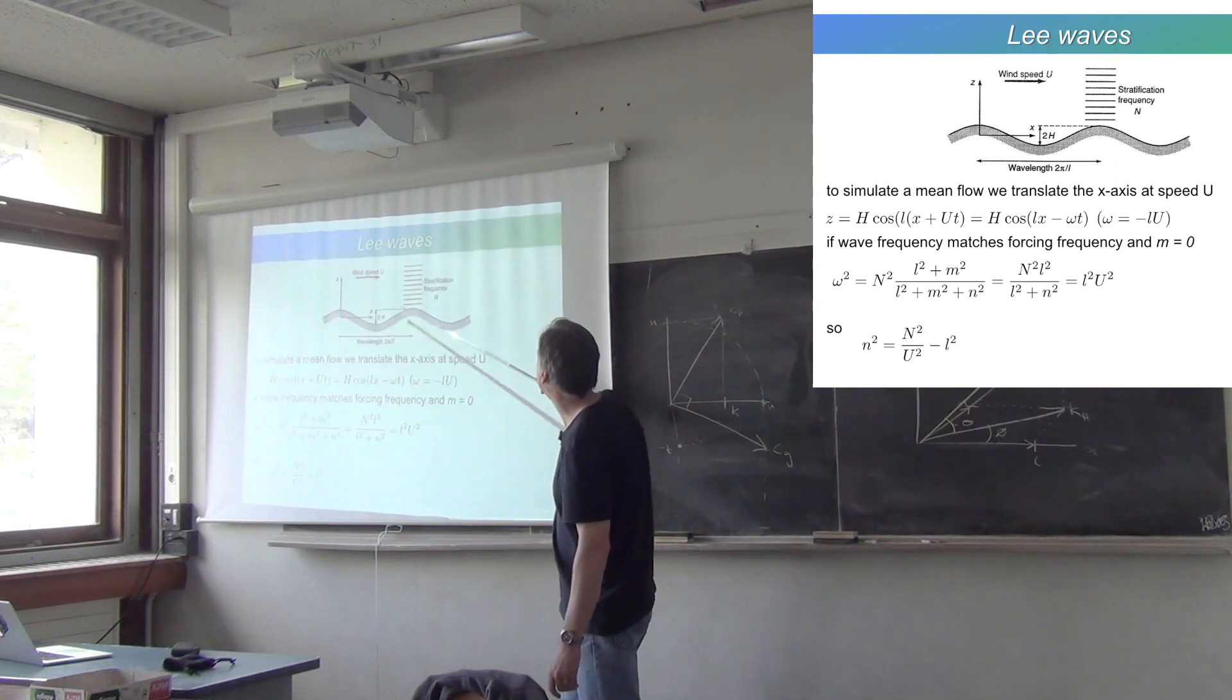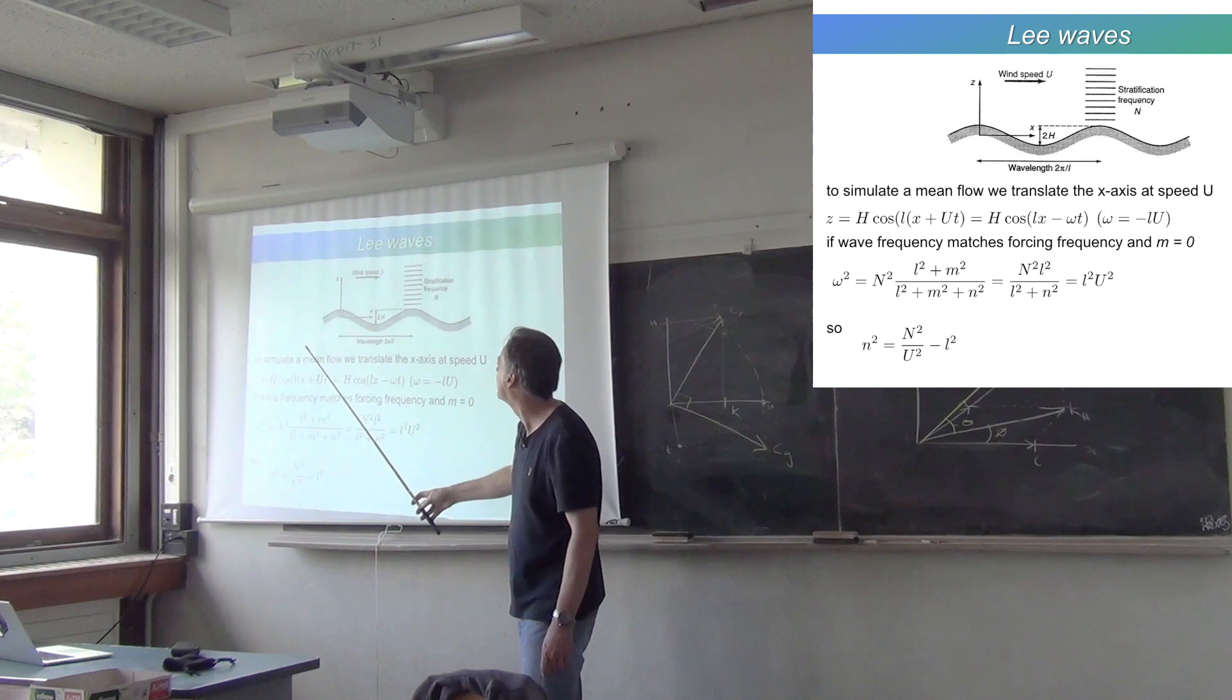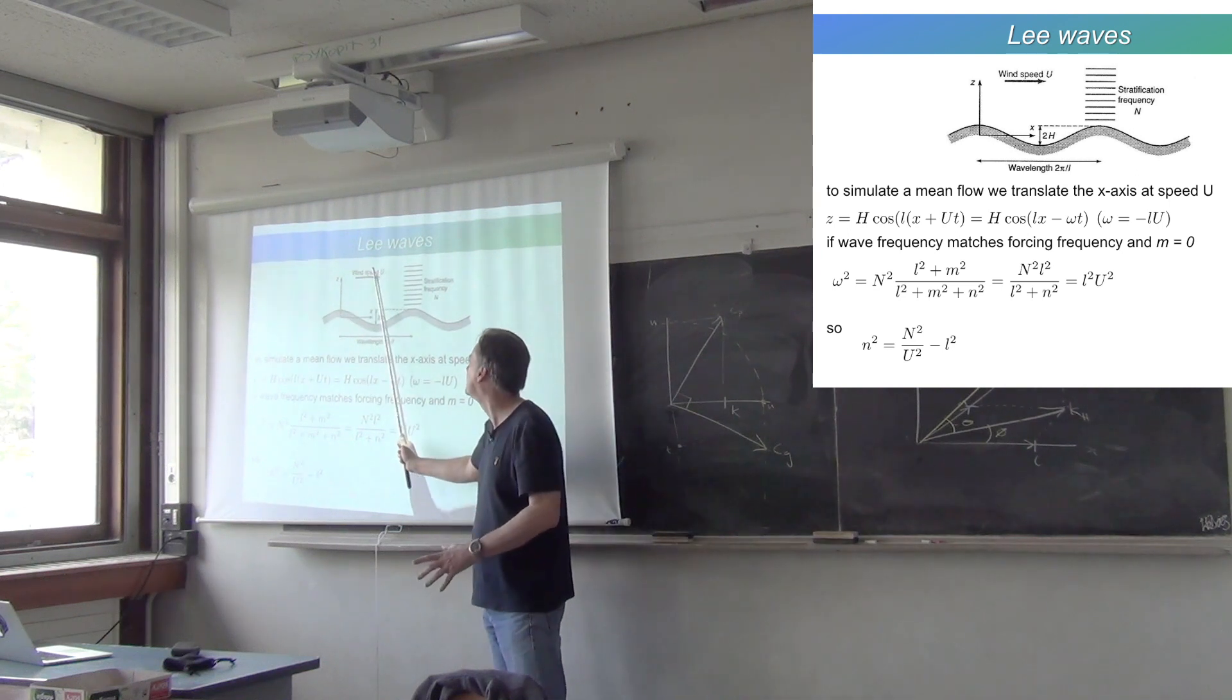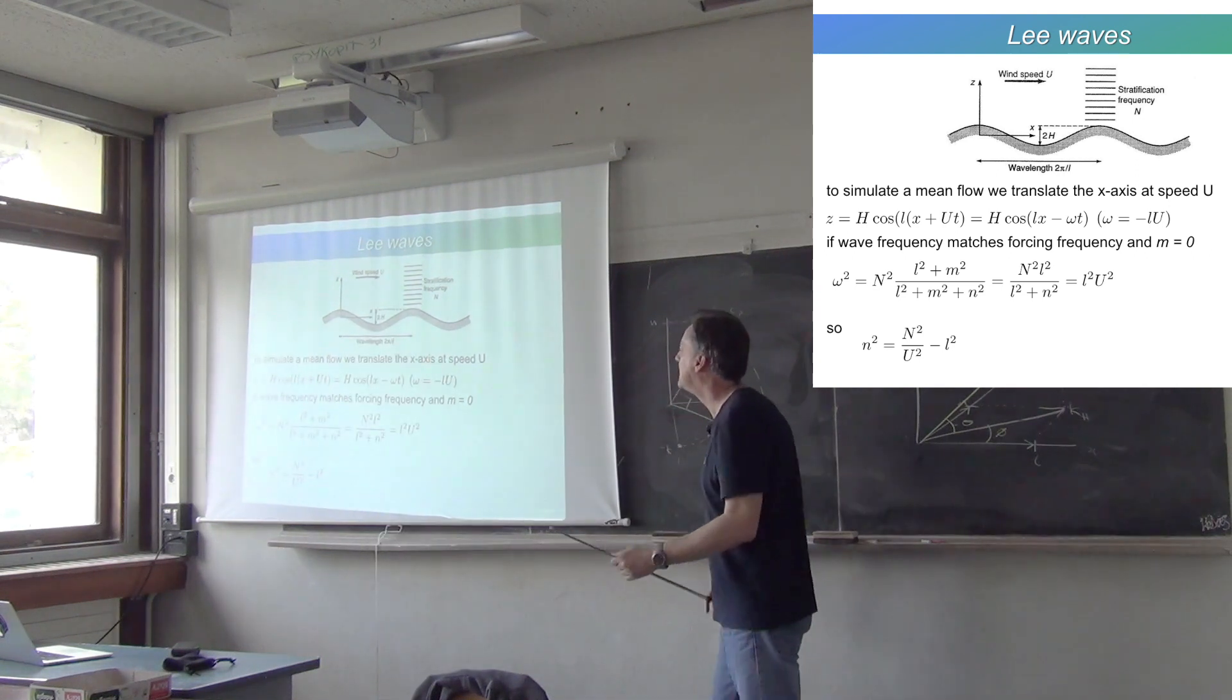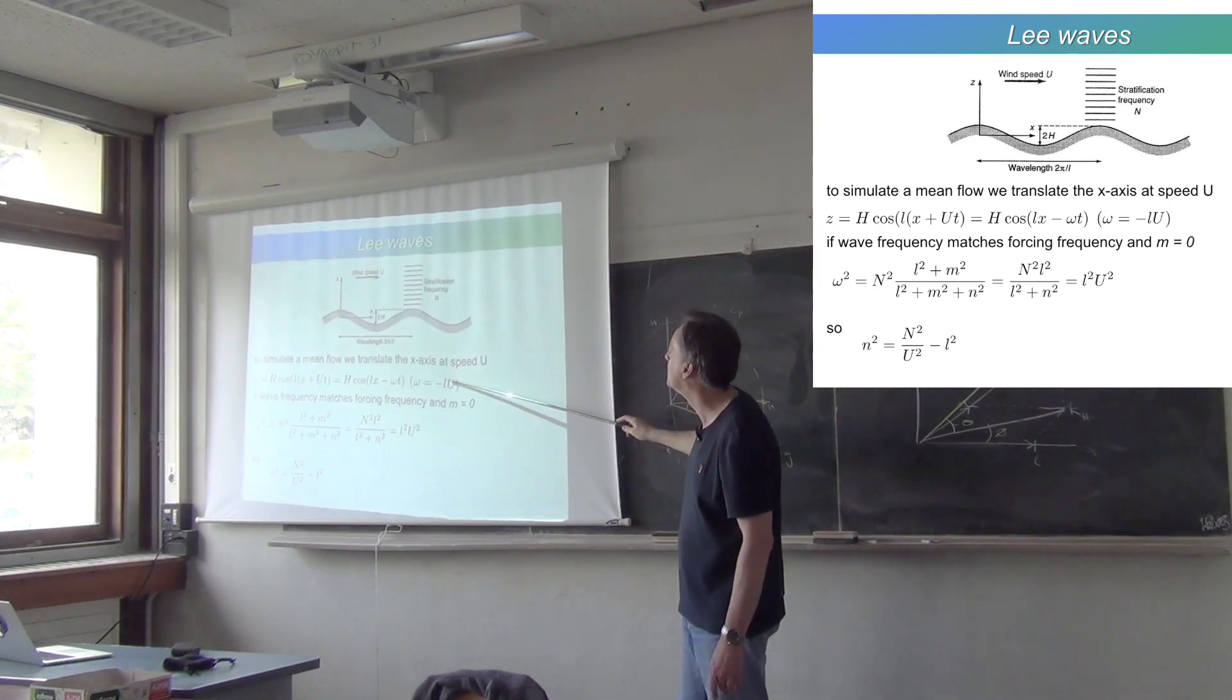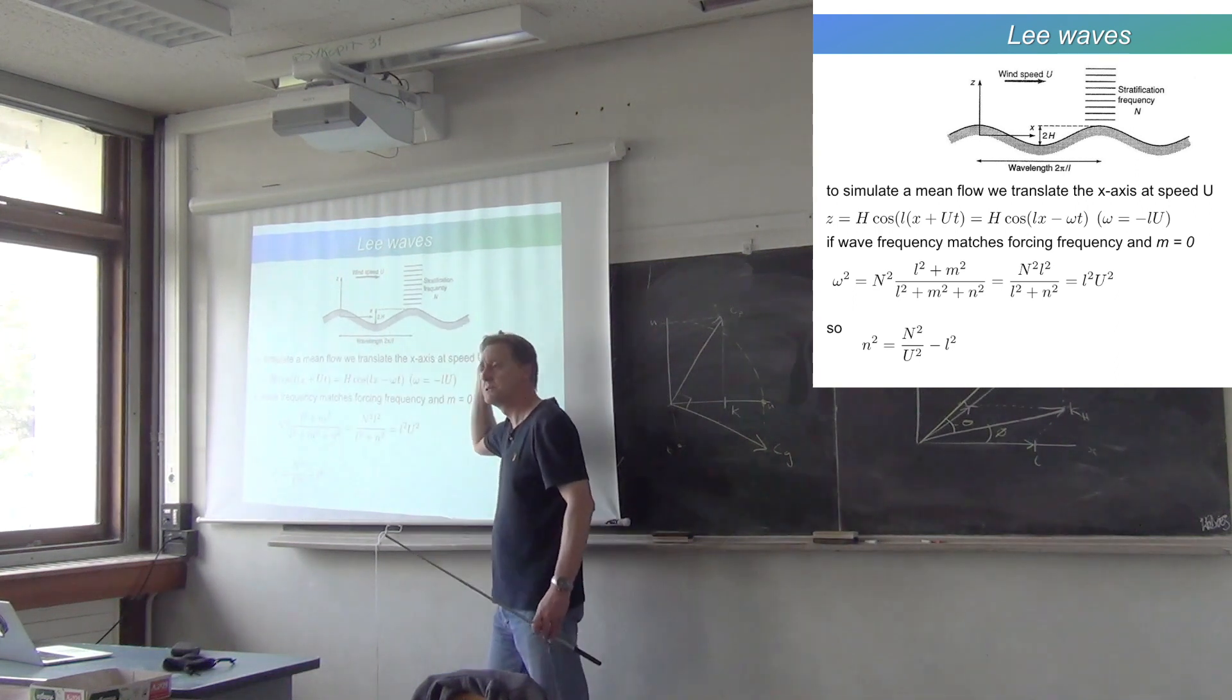As you flow across this topography, your frequency will be determined by your flow speed. The elevation Z that you feel will be L times X, because that's where it is in space, plus a thing you add to X which is U times T. So it's L times X plus UT because you're flowing across it, or you can imagine that you're in a fixed position and the terrain is just passing in the opposite direction beneath you. That means you can identify omega T with L times U, so omega equals L times U. That gives you your forcing frequency.